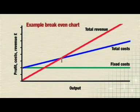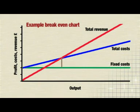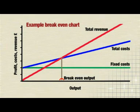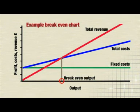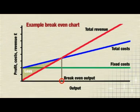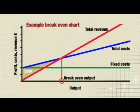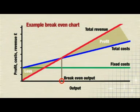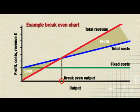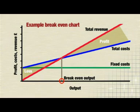Where your total costs and total revenue lines cross is your break even output. To the left of this point, the difference between the total costs and the total revenue line is loss, and to the right it's profit, because the total revenue is greater than the total costs.